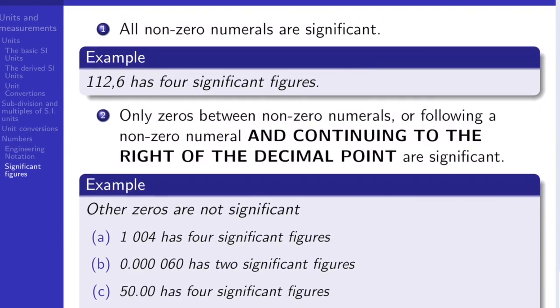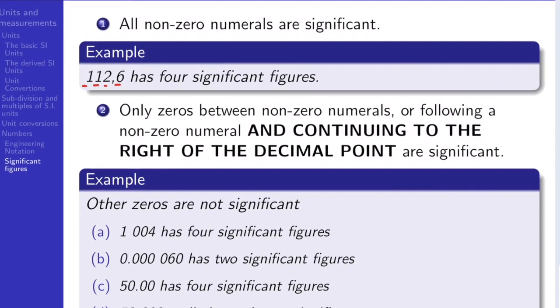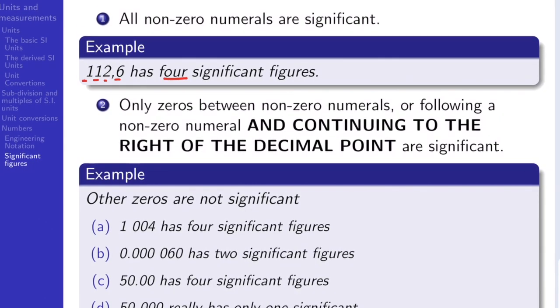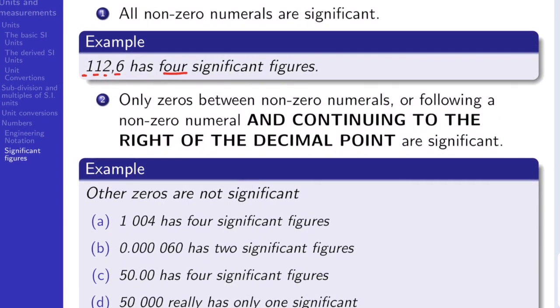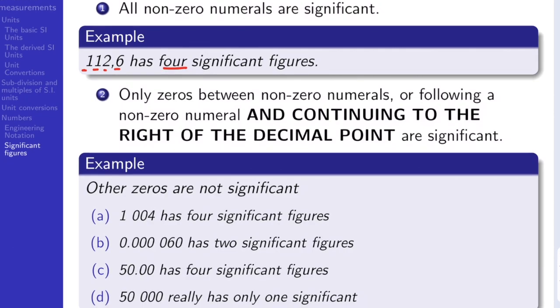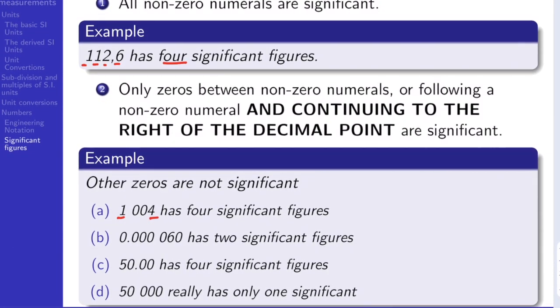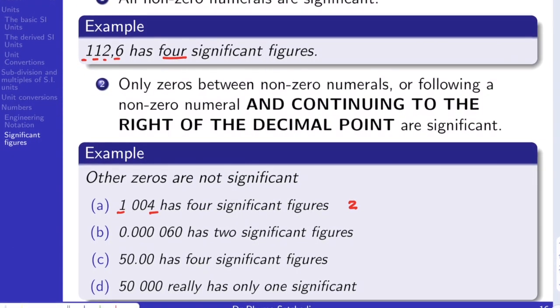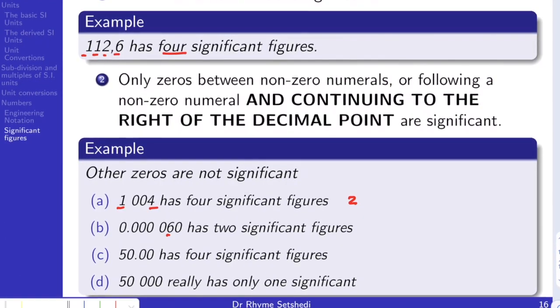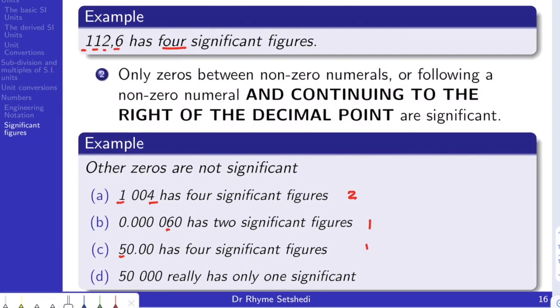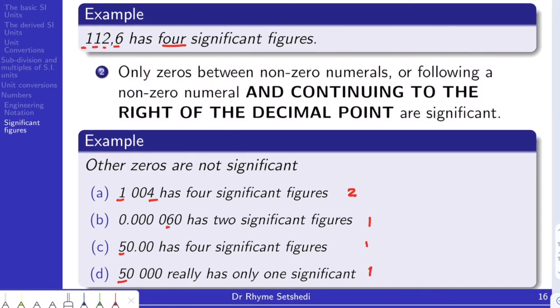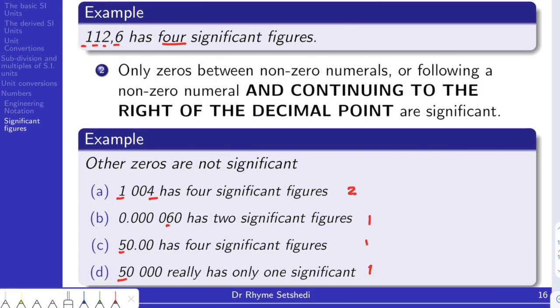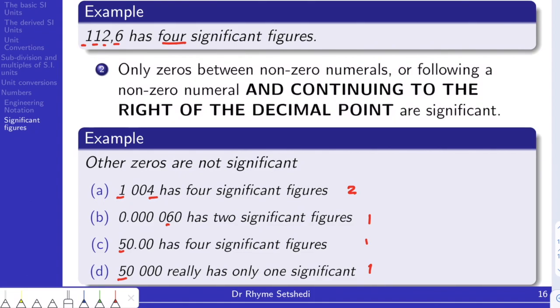And in the other examples, A, B, C, D, at the bottom there, we've got 1, 2. So here we can also say we've got 2. Here we also have 1. There we've got 1. There we also have 1. These are the non-zero numerals, which automatically become significant.